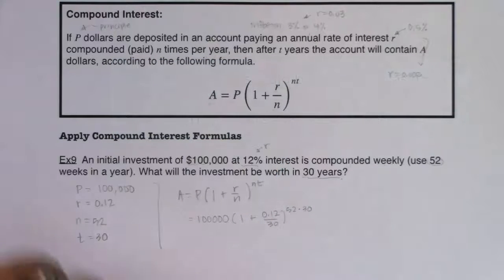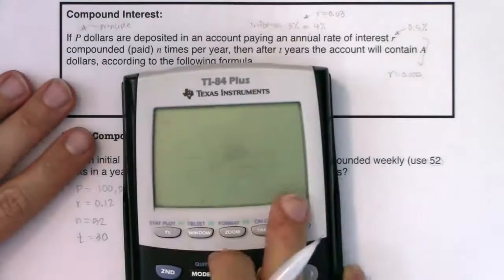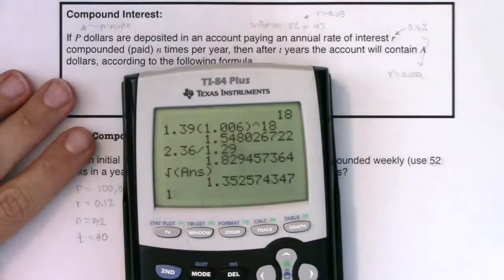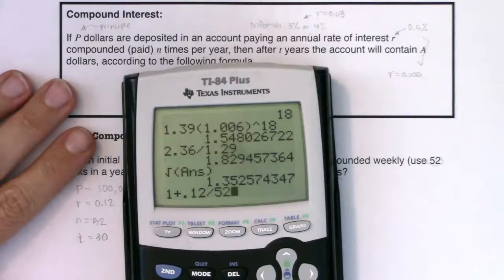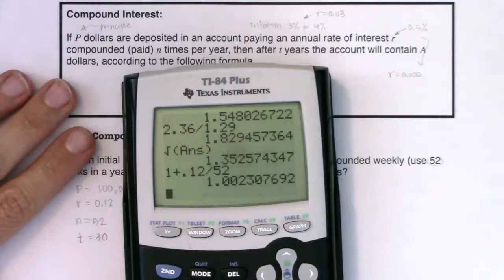Now if we go one step further I want to show you what that base is. So we'll take our equilibrium of 1, we'll add 0.12 to it, divide by 52 and I'm looking at a base of about 1.002.